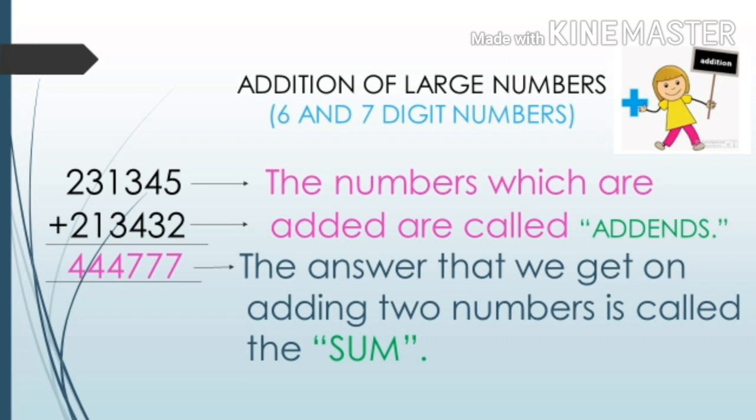Before discussing the rules, I just want to discuss the terms used for addition. These terms are addends and sum. The numbers which are added are called addends. The answer that we get on adding 2 numbers is called the sum.